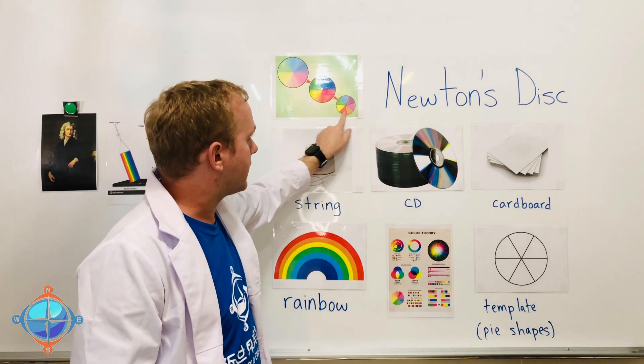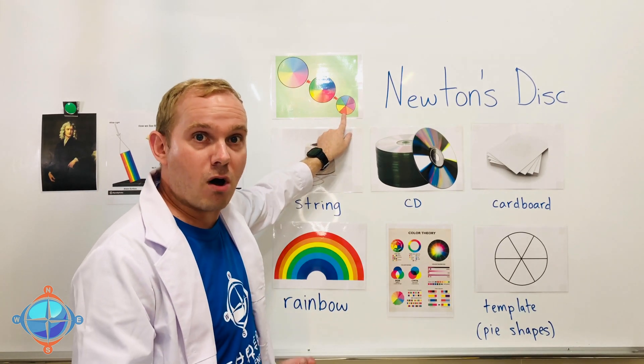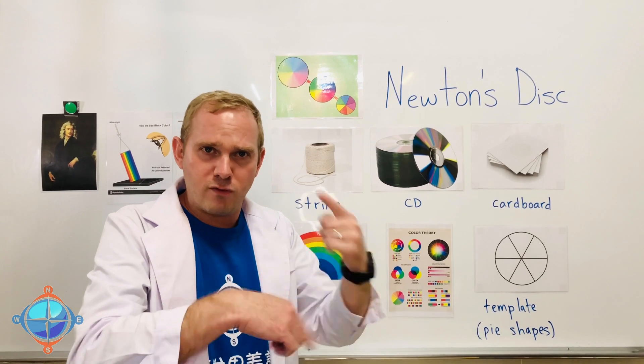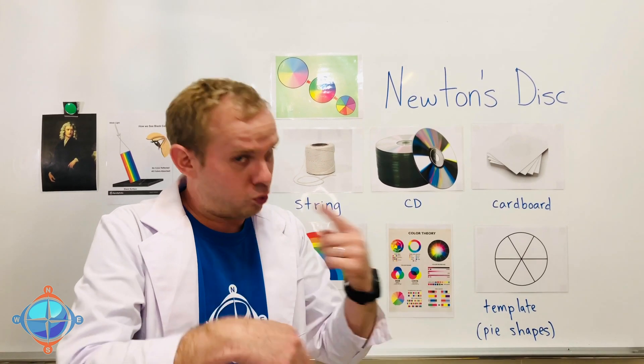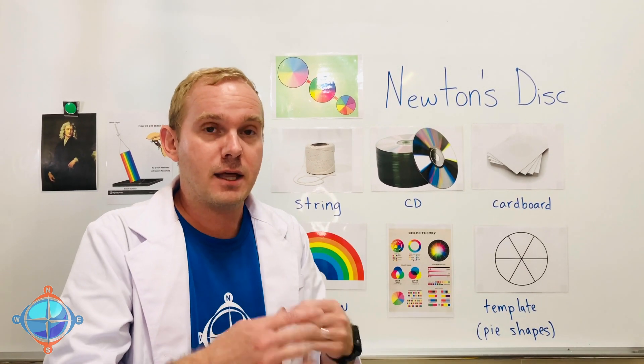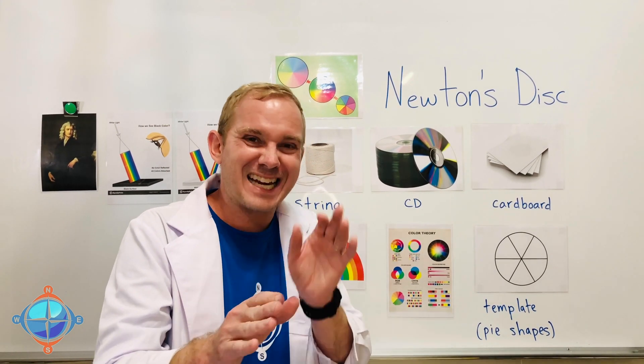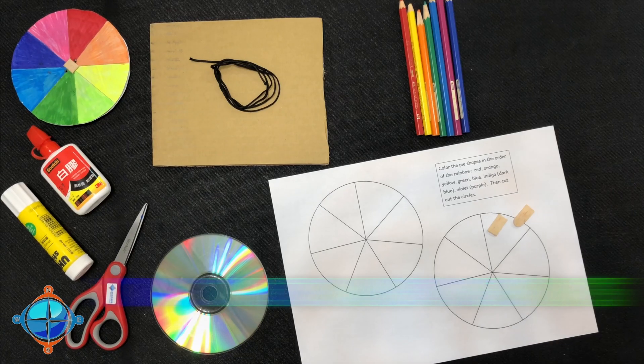Newton's Disc is a circle with all the colors of the rainbow. And if we can get that circle to move around really, really, really, really quickly, then our eyes will see all of the colors at exactly the same time.